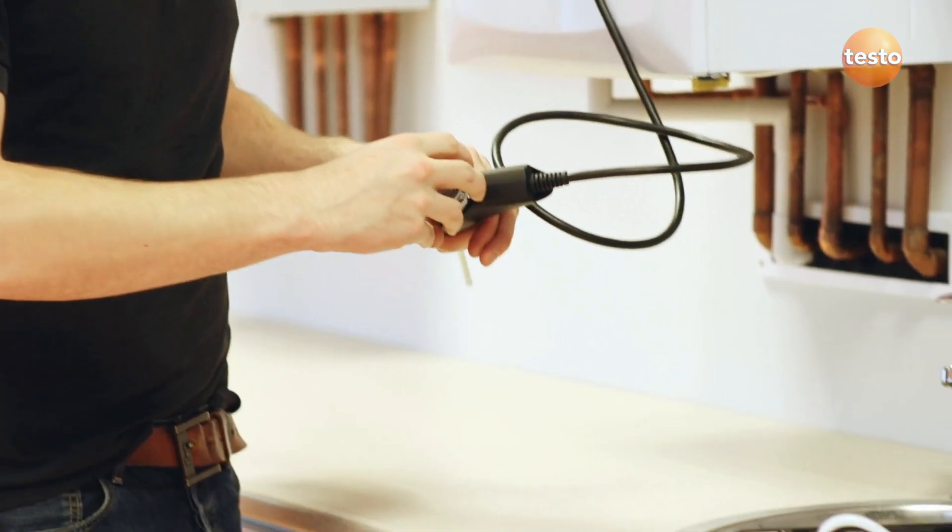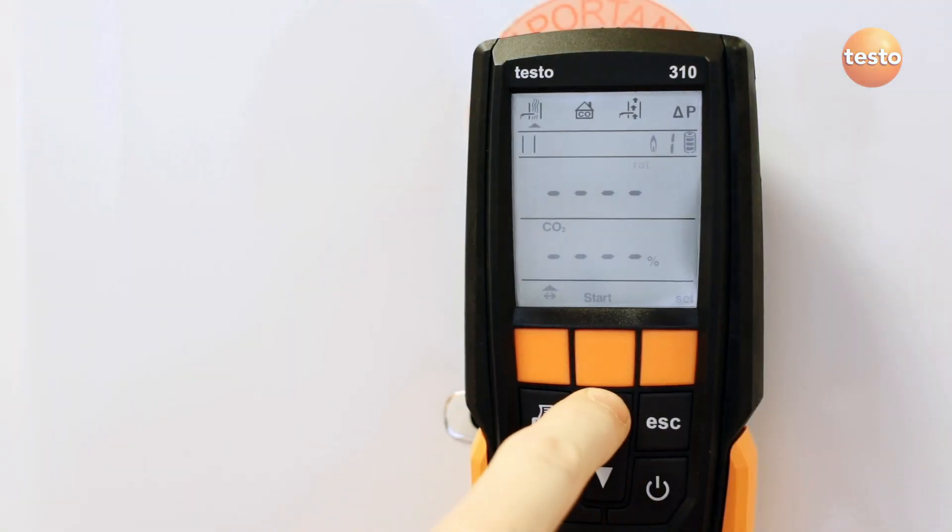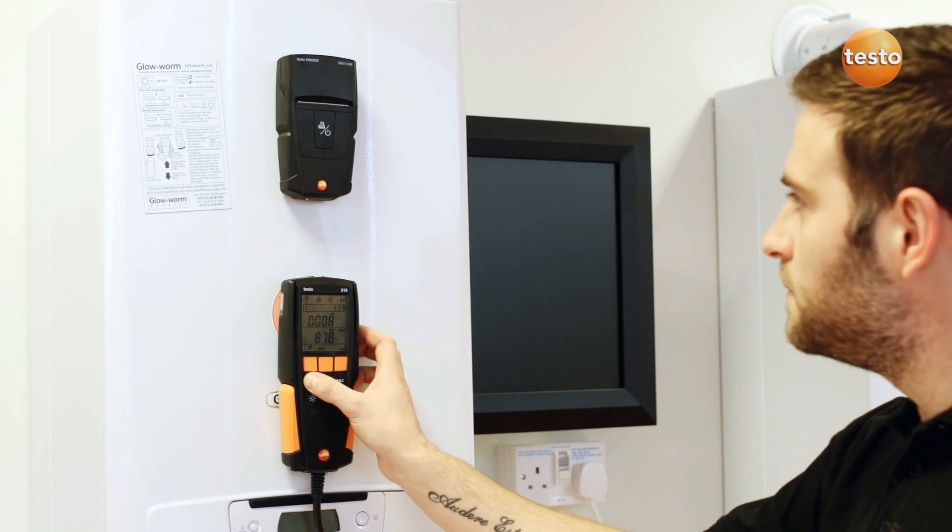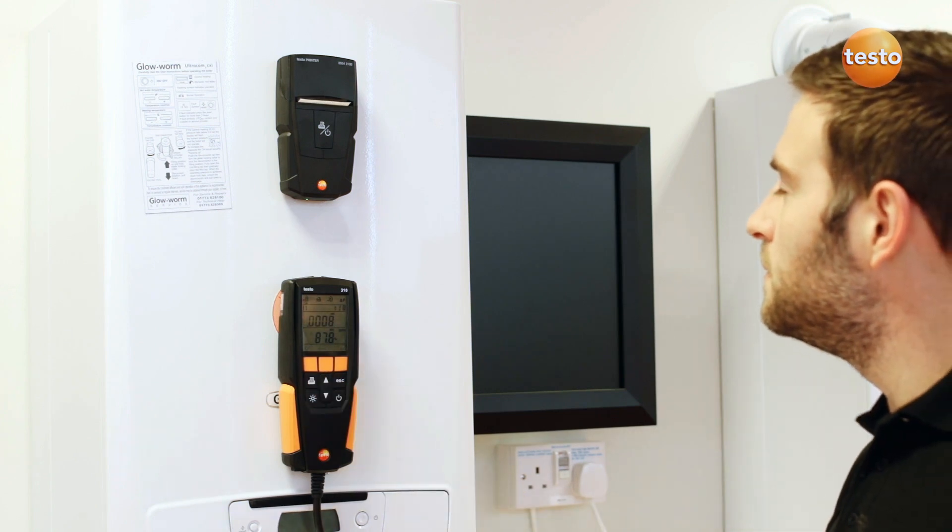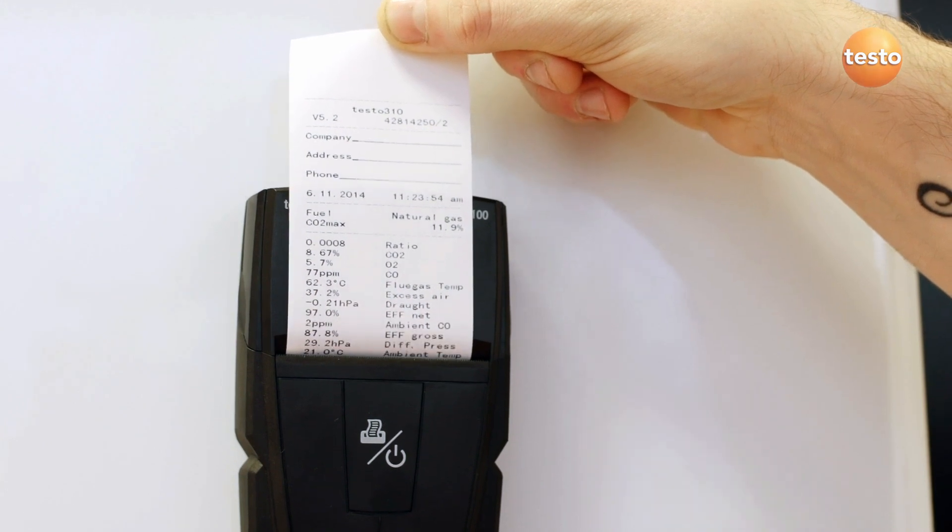The pressure and draft readings are held in the analyzer as long as it's switched on. The pressure reading is labeled P2 and draft would be stored as P1. Now when the ticket's printed, it will include pressure measurements as well as the associated flue gas readings.